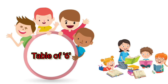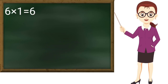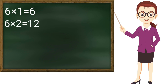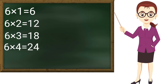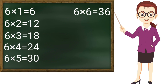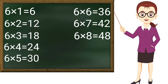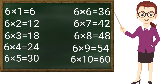Now table of 6: 6 ones are 6, 6 twos are 12, 6 threes are 18, 6 fours are 24, 6 fives are 30, 6 sixes are 36, 6 sevens are 42, 6 eights are 48, 6 nines are 54, 6 tens are 60. Thank you teacher.